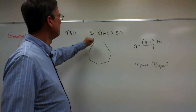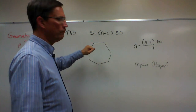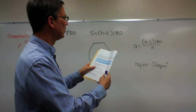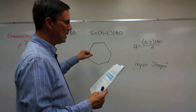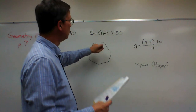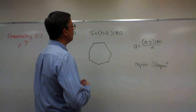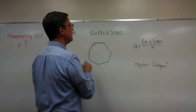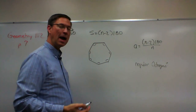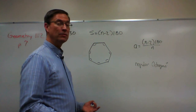This theorem says that for any polygon that has multiple sides, the measure of the angles of the convex polygon — convex means it's closed — the sum of the measures of the angles is equal to (n minus 2) times 180.